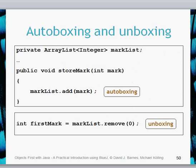This slide explains autoboxing and unboxing. We've got a class with an ArrayList of type Integer called markList. We create a method called public void storeMark which takes in a parameter of type int. We then call the normal add method from the ArrayList. What we're doing is actually adding a type int rather than an Integer object — this is autoboxing, which automatically converts a type int to a type Integer.